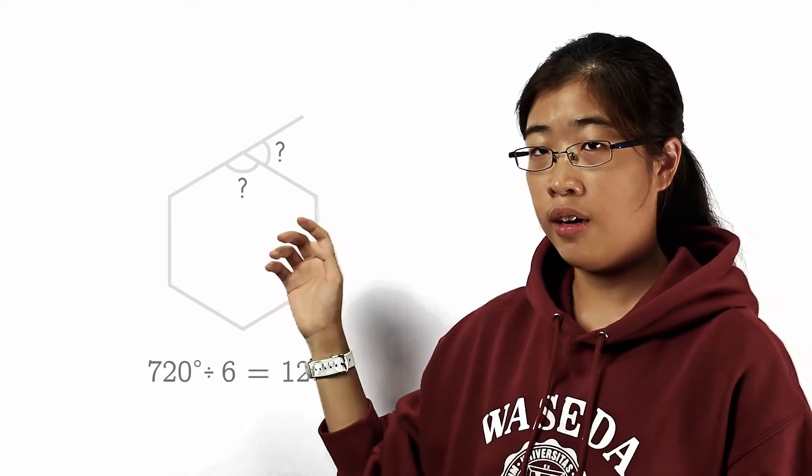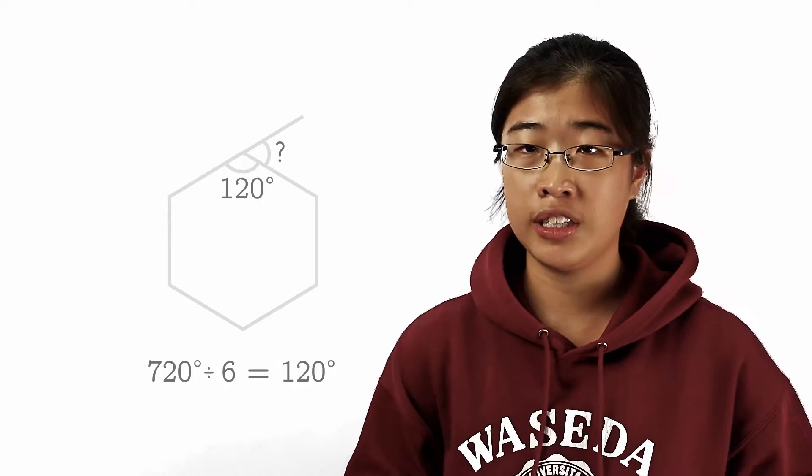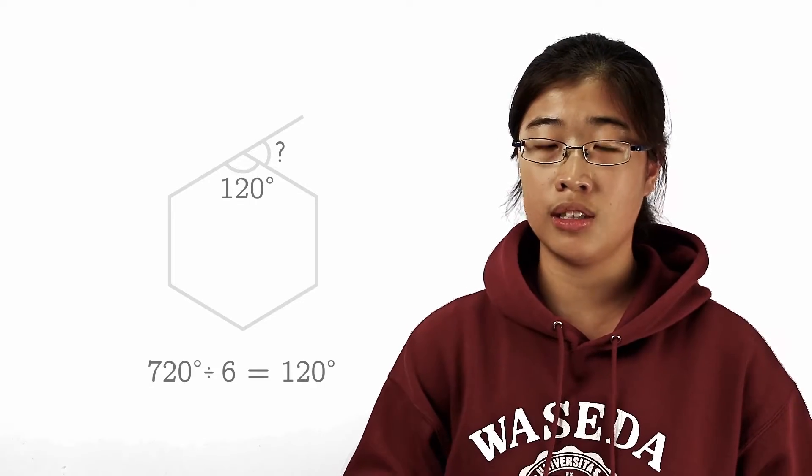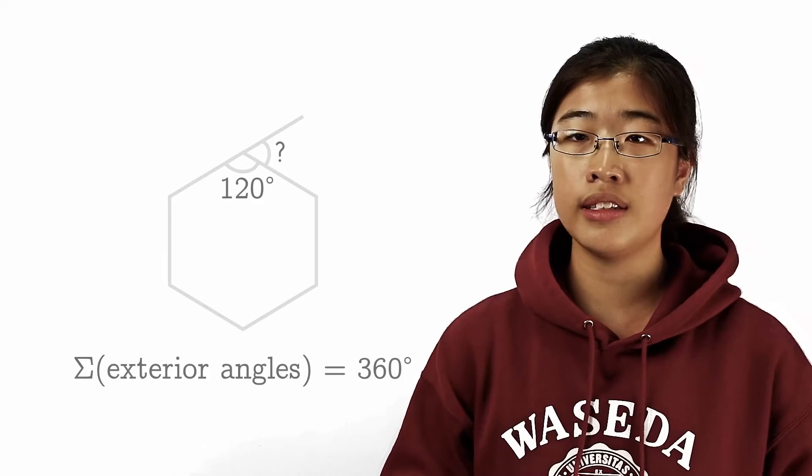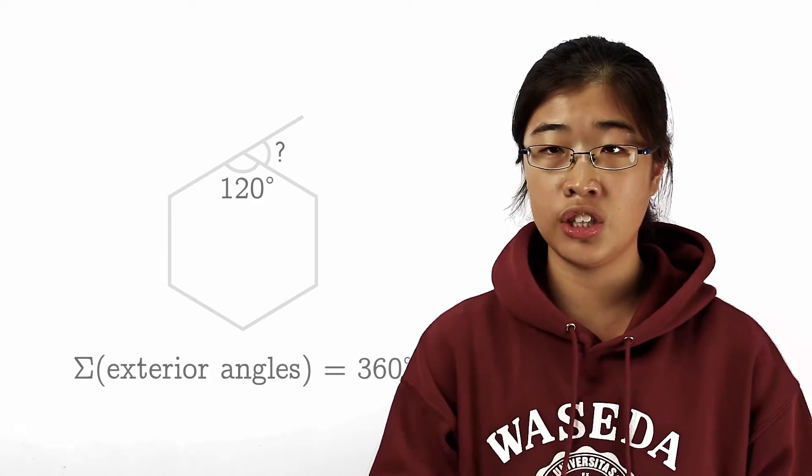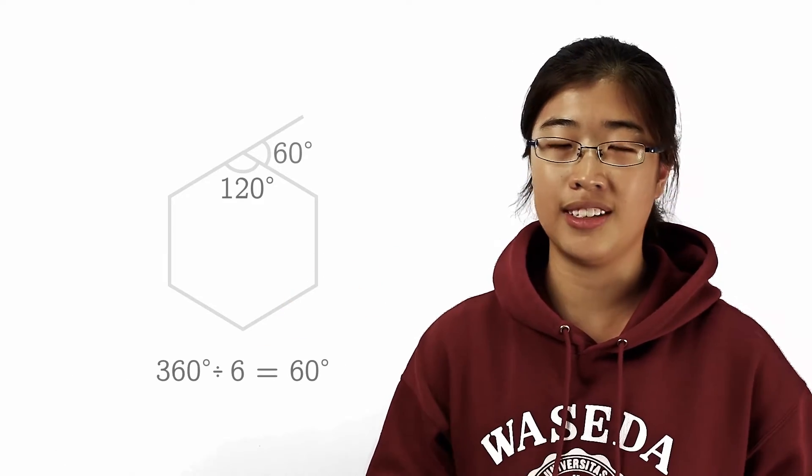To find one exterior angle, we can employ the same method. We know that the sum of 6 exterior angles is 360 degrees. And since they are all equal, we can find one by taking 360 divided by 6 to get 60 degrees.